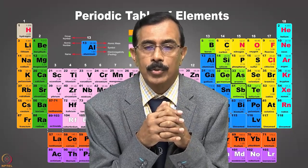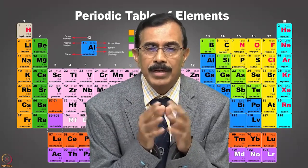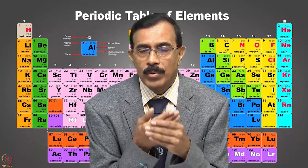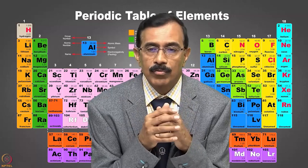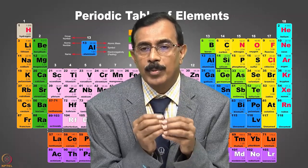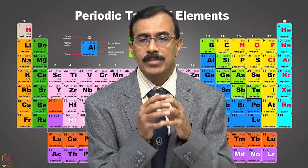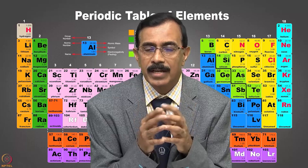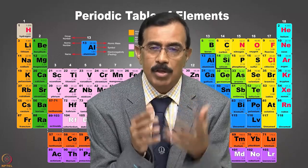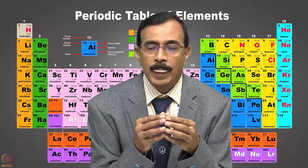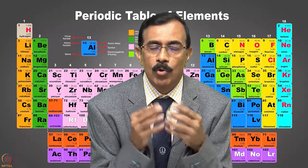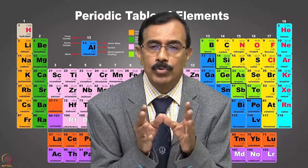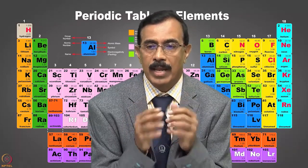Glenn Seaborg and Yuri Oganessian were given the distinction of having elements with atomic numbers 106 and 118 named after them. When element 106 was named Seaborgium, Glenn T. Seaborg said that this honor — having an element named after him — was more than receiving a Nobel Prize. These are the only two people whose names were considered for elements while they were still alive.